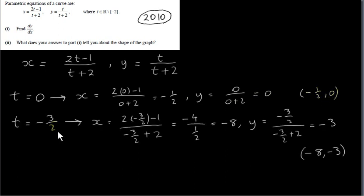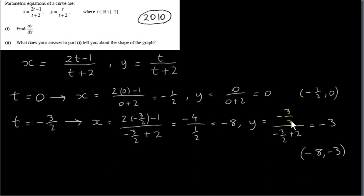A second point is found by letting t equal minus 3 over 2. Plugging in: 2 times minus 3 over 2 is minus 3; minus 3 minus 1 is minus 4; the denominator is minus 3 over 2 plus 2, which is a half. Multiplying above and below by 2 gives x equals minus 8. For y: minus 3 over 2 divided by a half equals minus 3. So (−8, −3) is a second point on the curve.